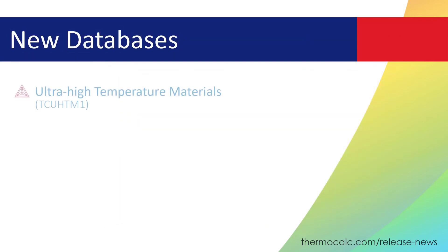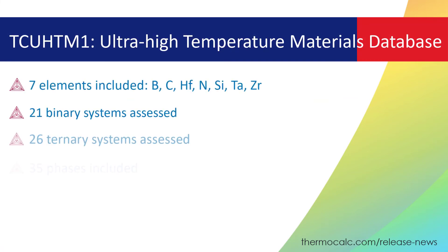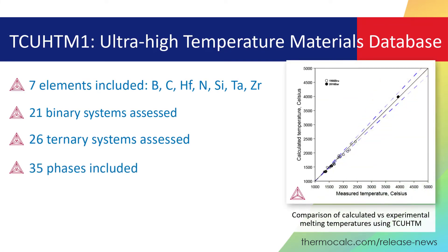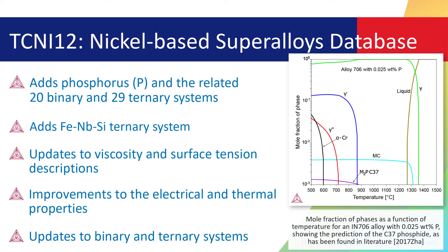The 2022b release includes eight new databases, including the introduction of our first ever database for ultra-high temperature materials. The ultra-high temperature materials database, TCUHTM1, is a completely new thermodynamic database for ultra-high temperature materials that can be used for hypersonic aircraft and space vehicles. TCUHTM1 includes seven elements, 21 binary systems, 26 ternary systems, and 35 phases. A new version of our nickel-based super-alloys database, TCNI12, is available with the 2022b release. The database adds phosphorus in the related 20 binary and 29 ternary systems.